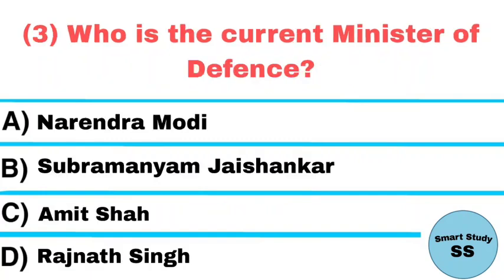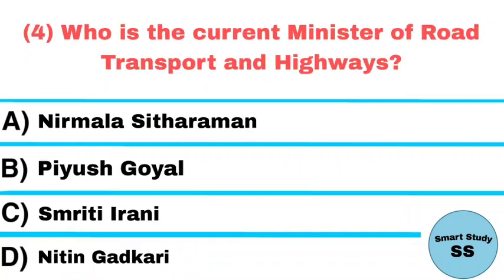Question number 3: Who is the current minister of Defense? Answer: Rajnath Singh. Question number 4: Who is the current minister of Road Transport and Highways? Answer: Nitin Gadkari.